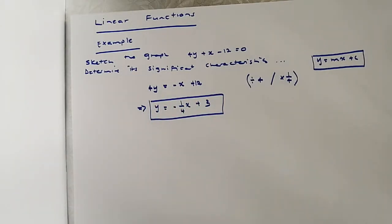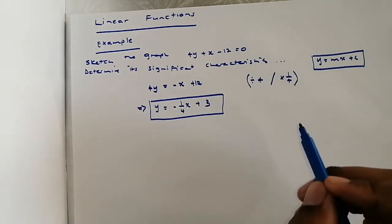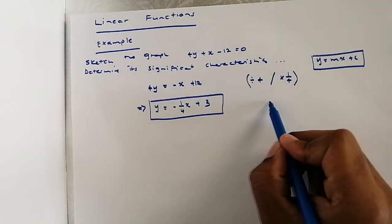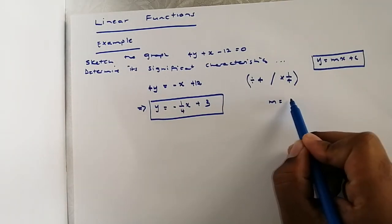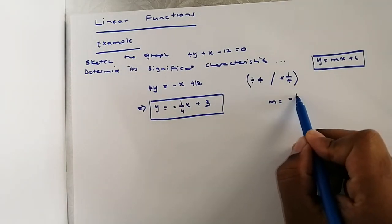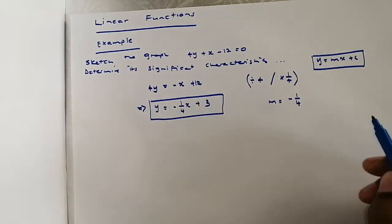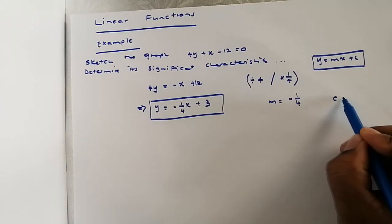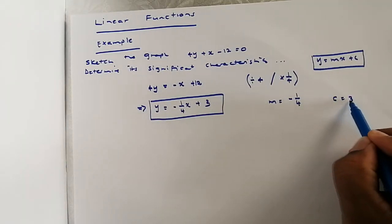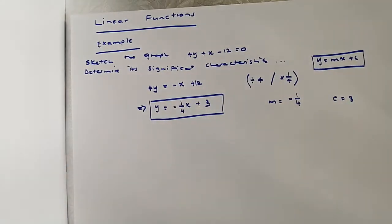From this equation we can identify two things: the slope or gradient equals -1/4, and c equals 3, which is our y-intercept.